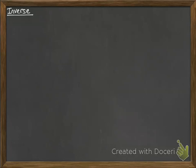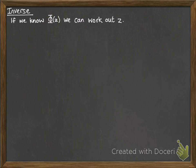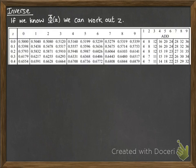Inverse normal — this is where we are working backwards. We know the probability and we want to work out the value of z that gives us that probability. So if we know φ(z), we can work out z. We need the table to do this.